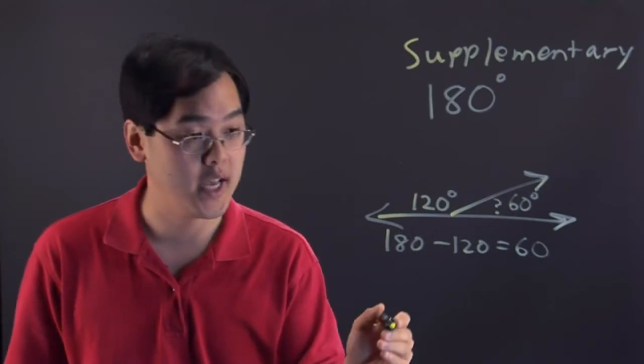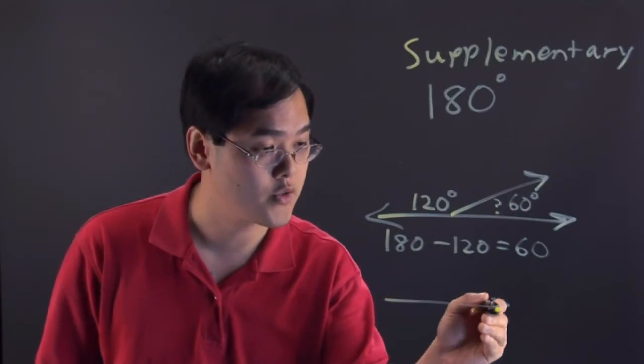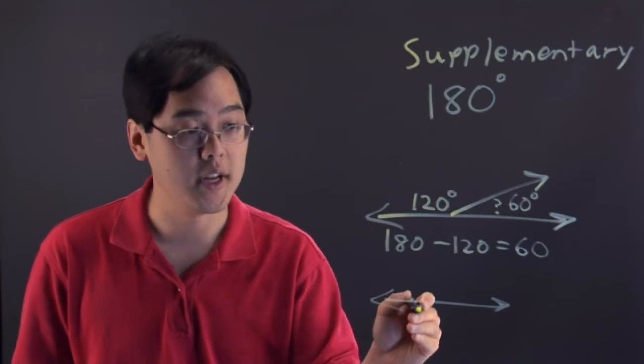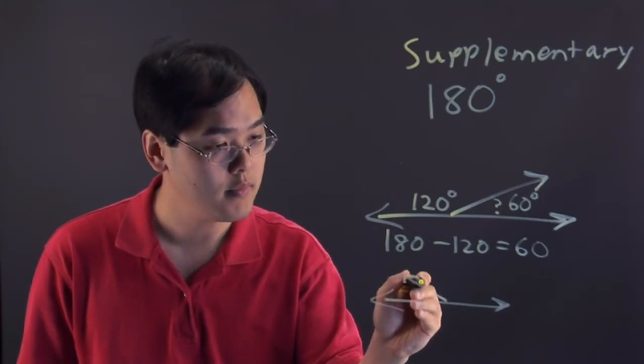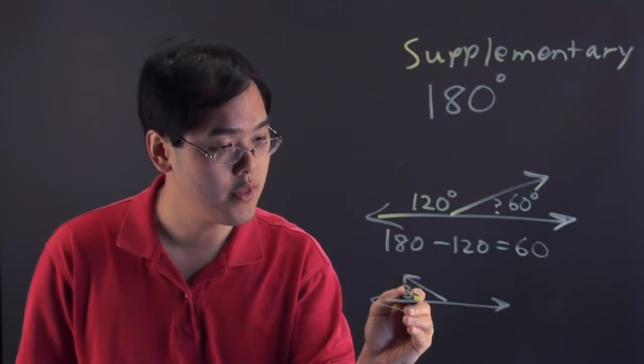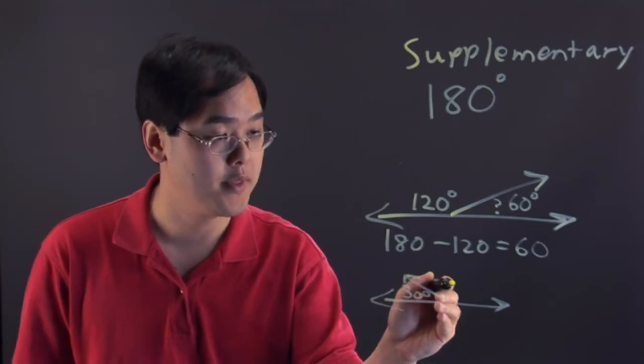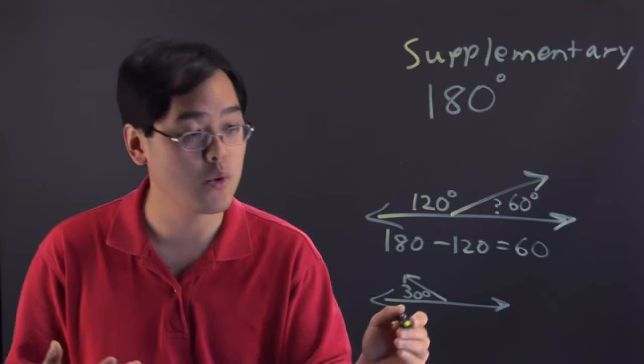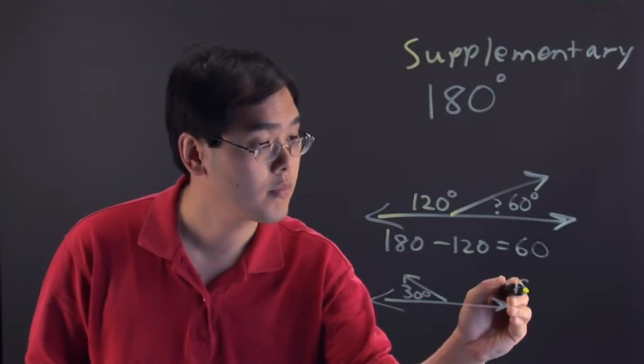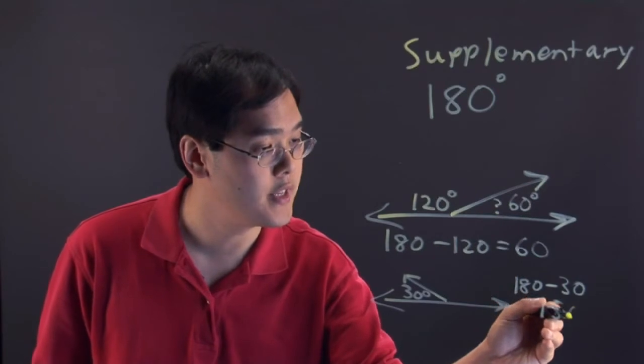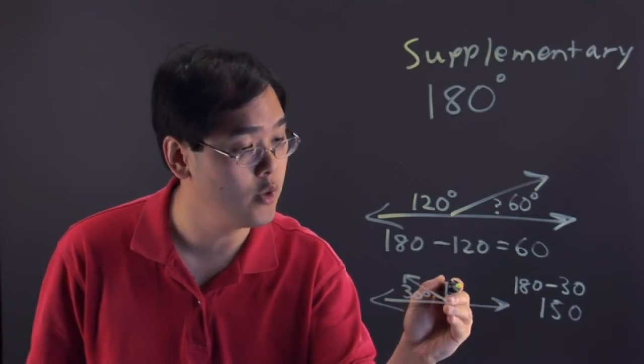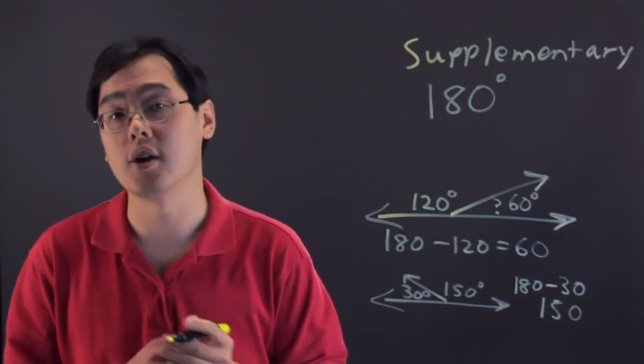Now if you have another example, take a straight line and divvy it up into two pieces. Suppose this was 30 degrees and you want to find out the missing angle here. Again, just take 180 minus 30 and that'll give you 150. And so the missing angle, or the supplement, is 150 degrees.